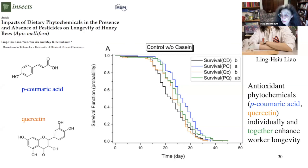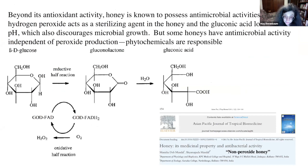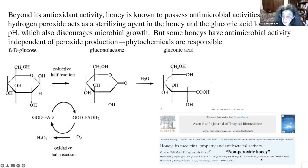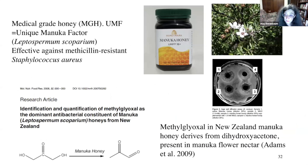Beyond its antioxidant activity, honey possesses antimicrobial activity. Hydrogen peroxide is a sterilizing agent and gluconic acid lowers pH, but some honeys have antimicrobial activity independent of these universal properties. The so-called non-peroxide honeys derive their antimicrobial activity from phytochemicals. The most famous non-peroxide honey is manuka honey, from Leptospermum scoparium in New Zealand. It contains a compound called methylglyoxal, derived from dihydroxyacetone present in the manuka flowers, and is so effective as an antibacterial that it is FDA-approved for wound treatment.